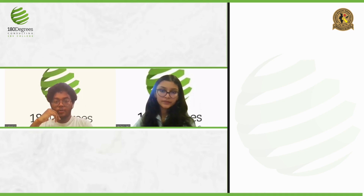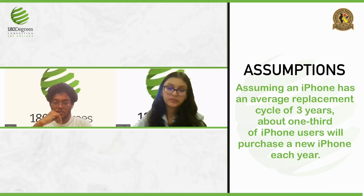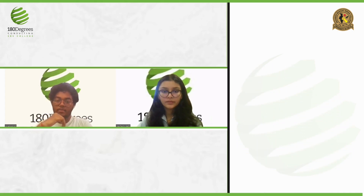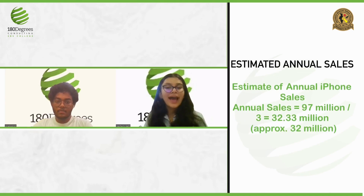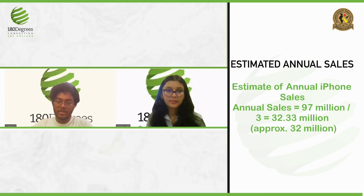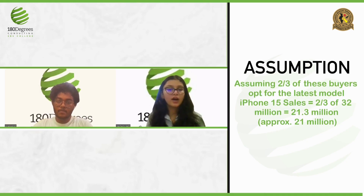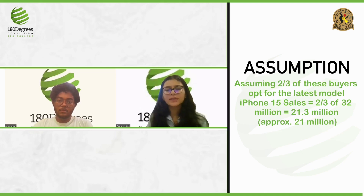To translate that into annual sales, I'll assume an iPhone has an average replacement cycle of about three years, so about one-third of iPhone users will purchase a new iPhone each year. Annual iPhone sales would be 97 million divided by 3, which comes out to approximately 32 million. Assuming two-thirds of these buyers opt for the latest model, iPhone 15 sales would be two-thirds of 32 million, which comes out to approximately 21 million.